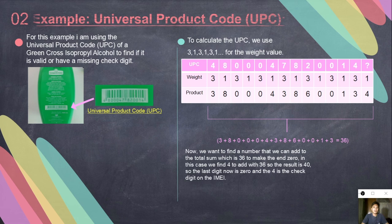We need to find a sum that can add to 36 so it will be divisible by 10. In this case, we find 4 to add with 36 to make it divisible by 10. The solution is 36 plus 4 equals 40, and 4 is the check digit to complete the UPC or the universal product code.